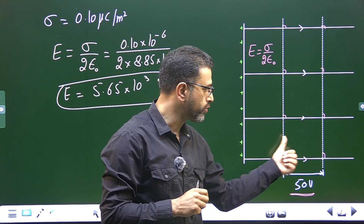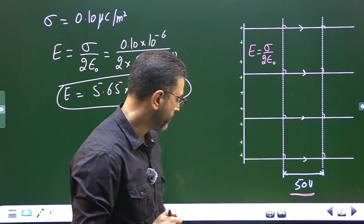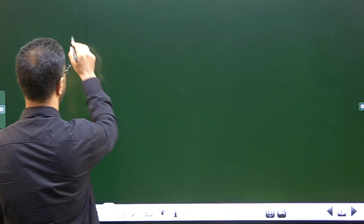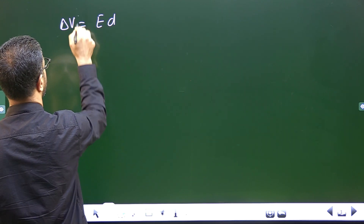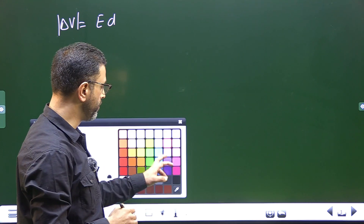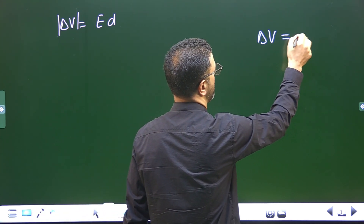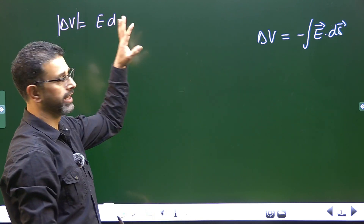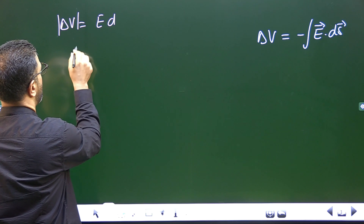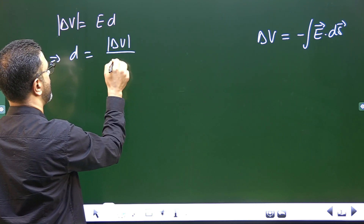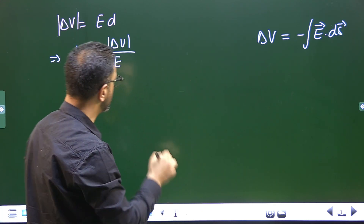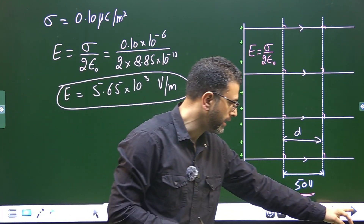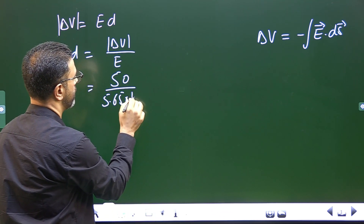Now we have to find the distance between the two equipotential surfaces. The potential difference between them is 50 volts, and the physical separation is D. For a uniform field, the relationship is simply: potential difference equals E times D. The basic equation is delta-V equals minus the integral of E dot ds, which for a uniform field gives E times D. So D equals the potential difference divided by E: 50 volts divided by 5.65 times 10 to the power 3.